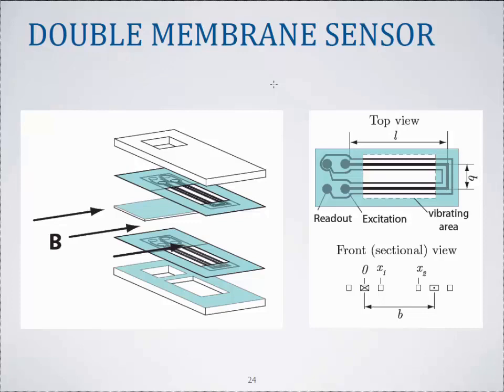These membranes consist of copper coated polymer sheets which are structured by photolithography and wet etching, and are excited by means of Lorentz forces and read out via a motion induced voltage.